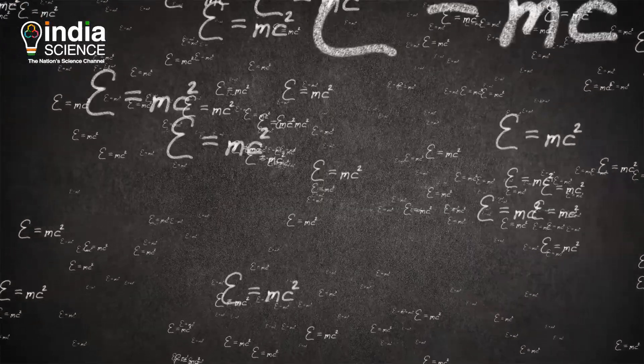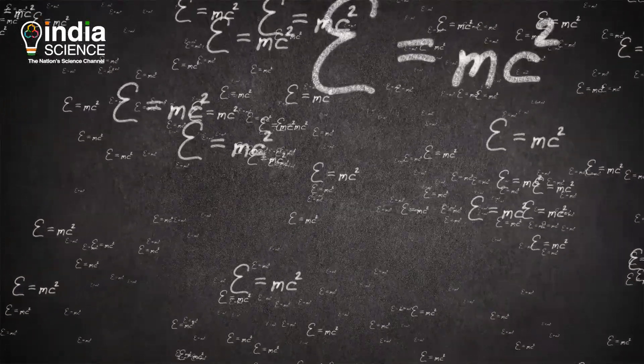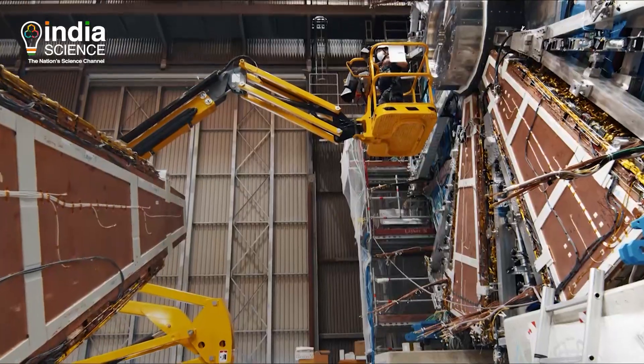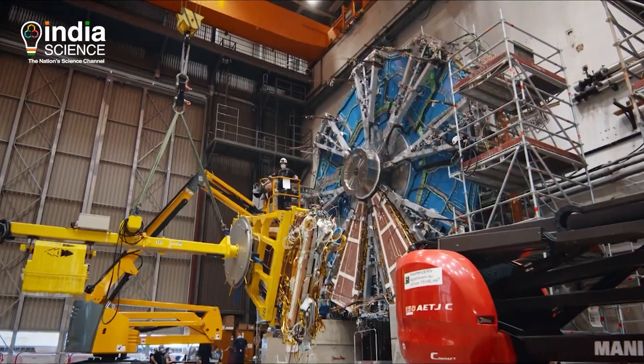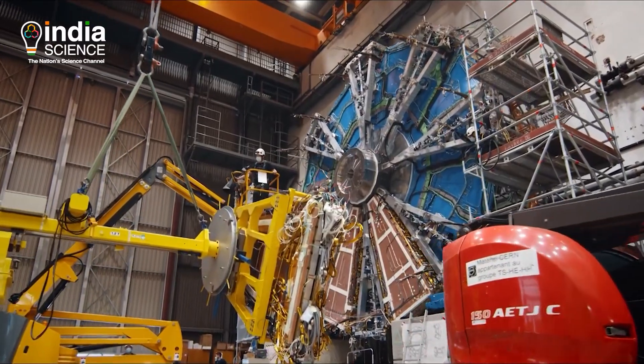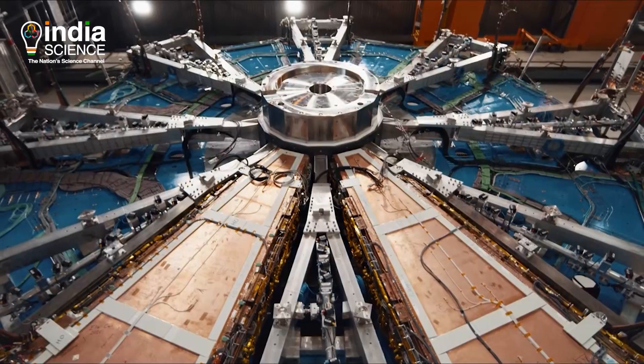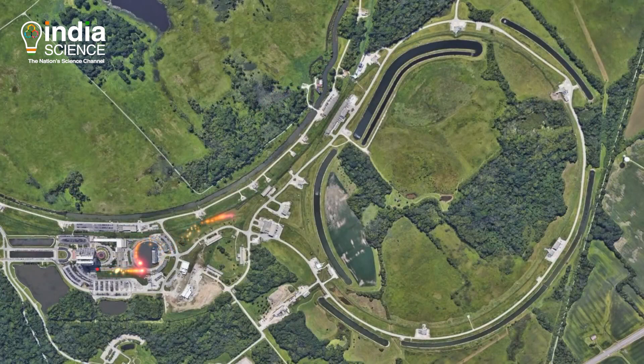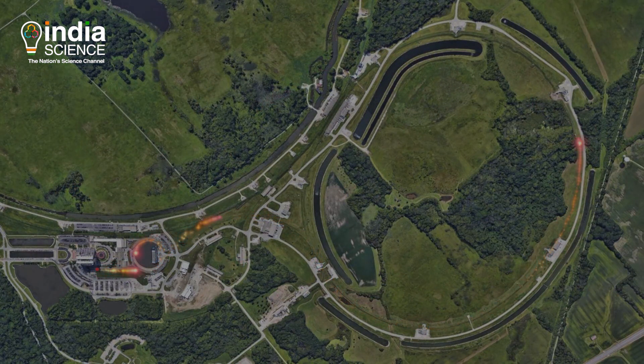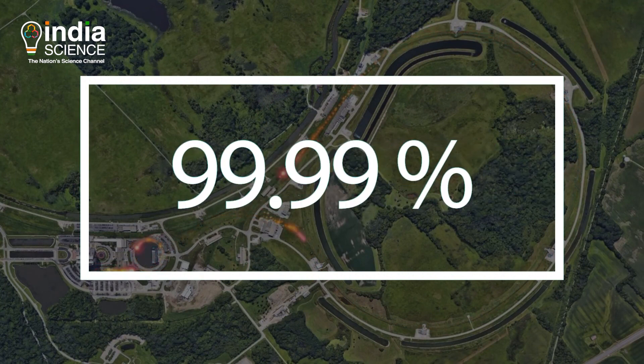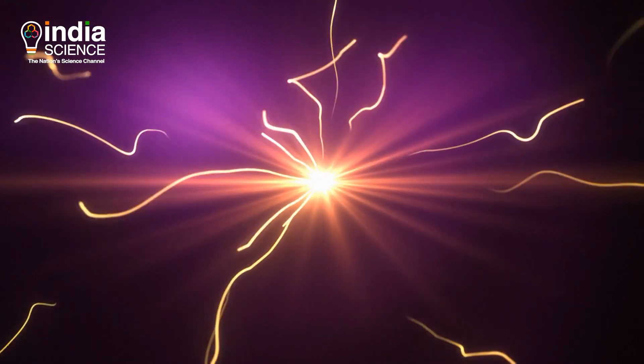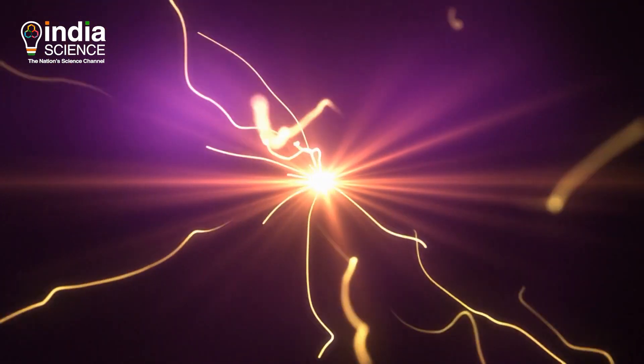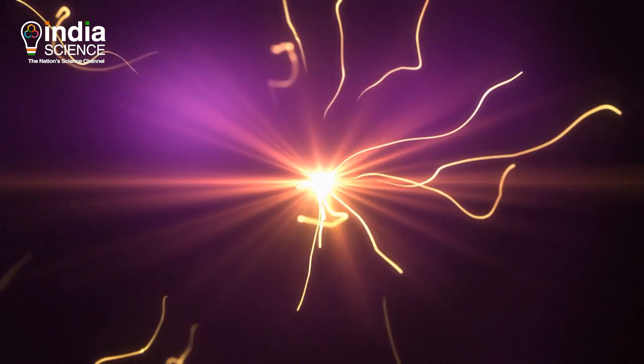The closest humankind has ever come to reaching the speed of light is inside powerful particle accelerators like the Large Hadron Collider and the Tevatron. These machines accelerate subatomic particles to more than 99.99% of the speed of light, but they can never reach the speed of light because that would require an infinite amount of energy.